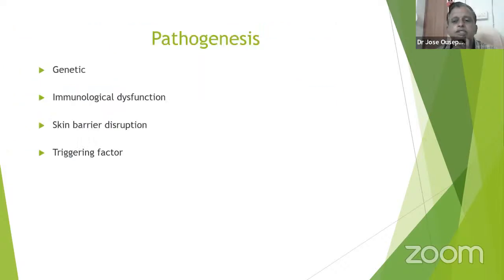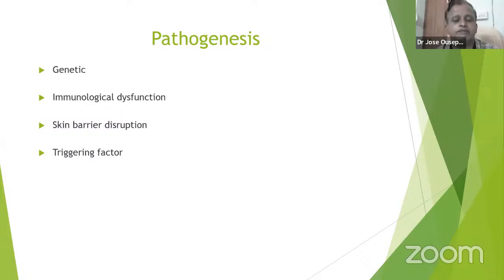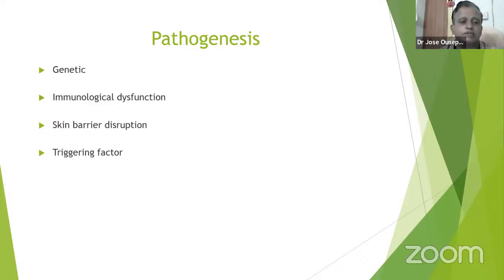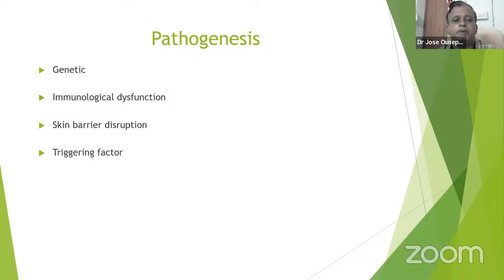Regarding the pathology of Atopic Dermatitis, there are many theories put forward. The pathogenesis can be classified into genetic background, immunological dysfunction, skin barrier disruption, and triggering factors — all of which overlap in the pathogenesis of Atopic Dermatitis.